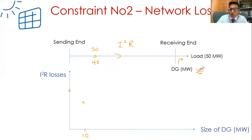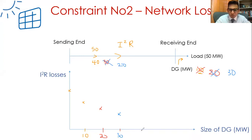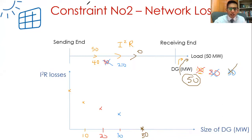If the DG produces 50 megawatts, the full power required by the load is produced locally - zero power flow from the grid, minimum losses. That's very good. But what if it increases to 60 megawatts? Now 50 is consumed, and 10 is going in the reverse direction back towards the grid to supply other localities. As the DG output keeps increasing - say to 100 megawatts - with only 50 megawatts consumed, 50 megawatts flows back, and we are back to the original loss level. If it increases above that, losses become worse than before.